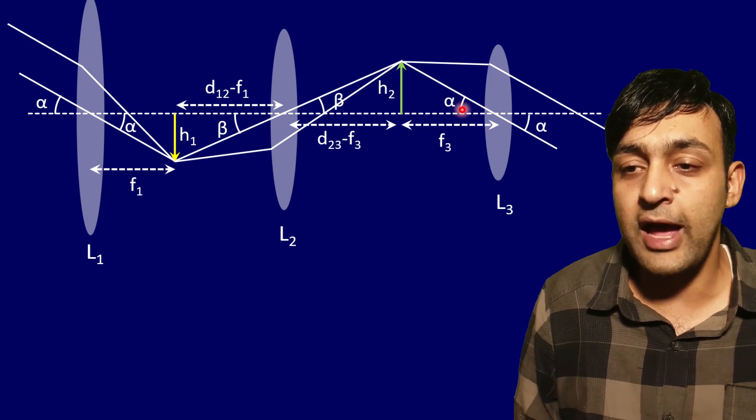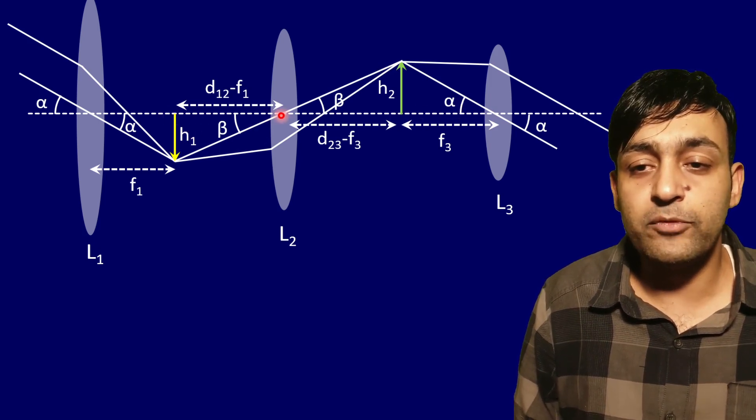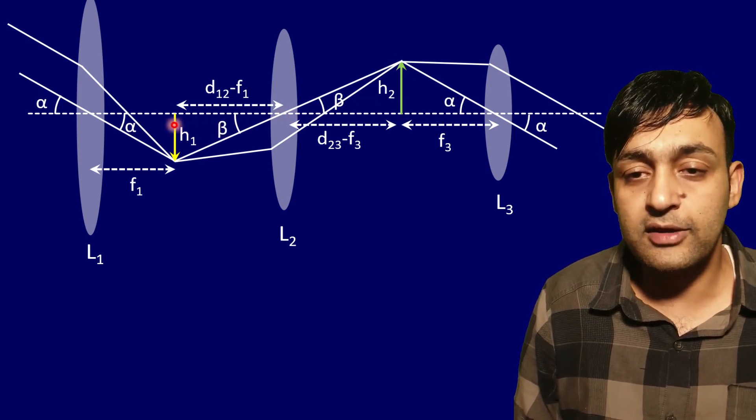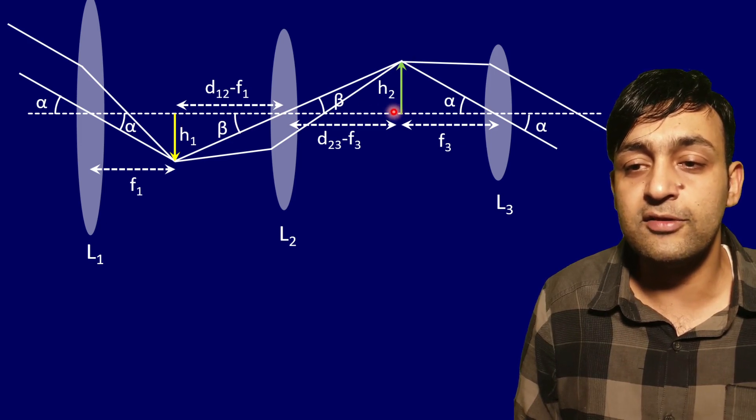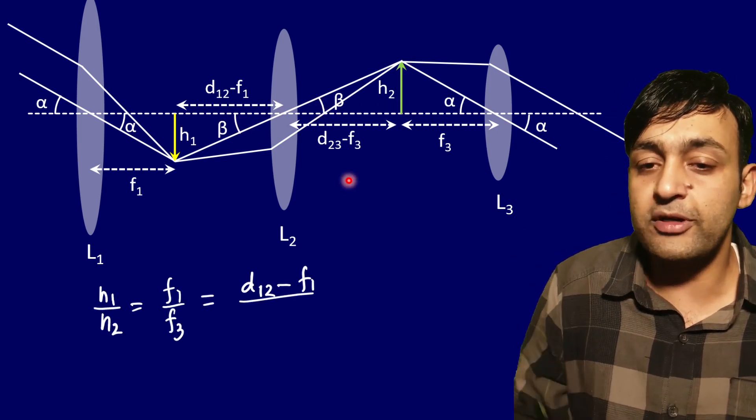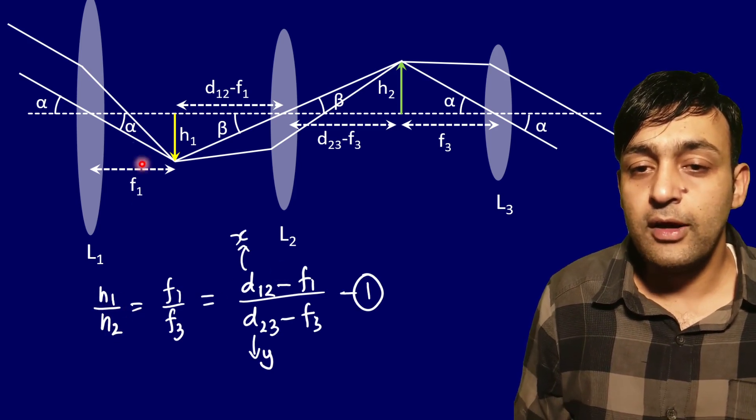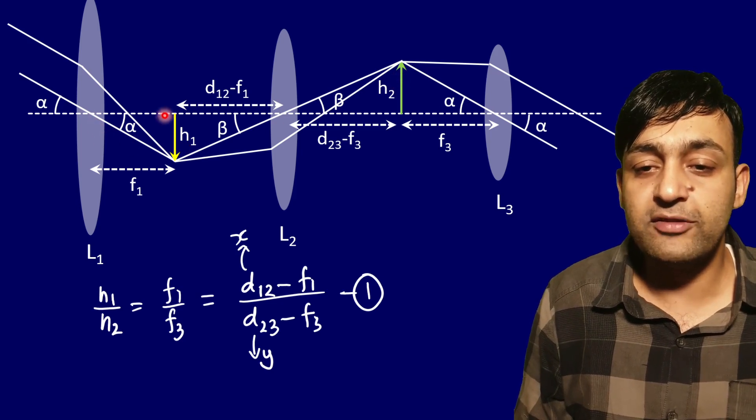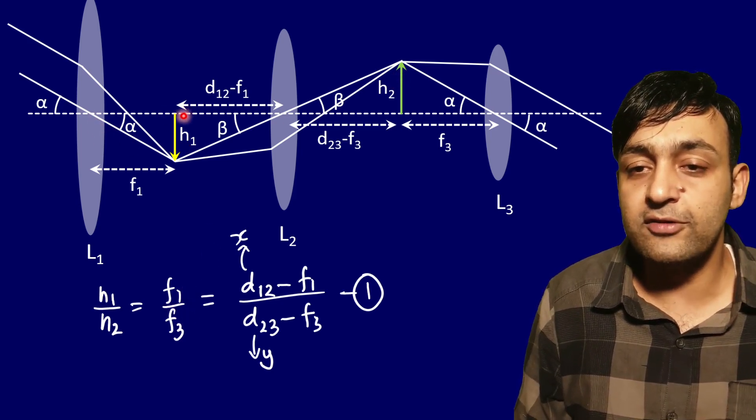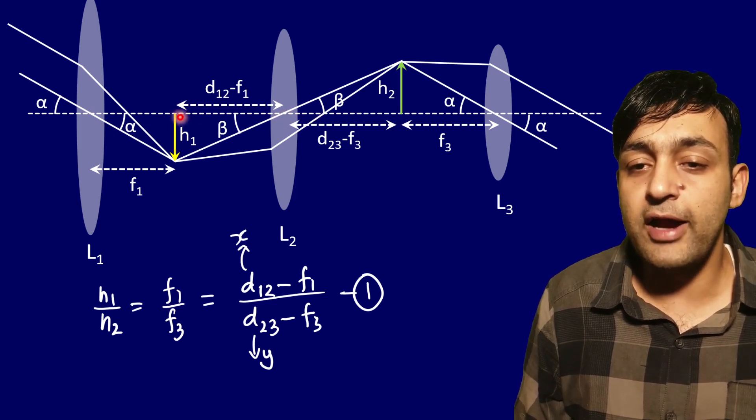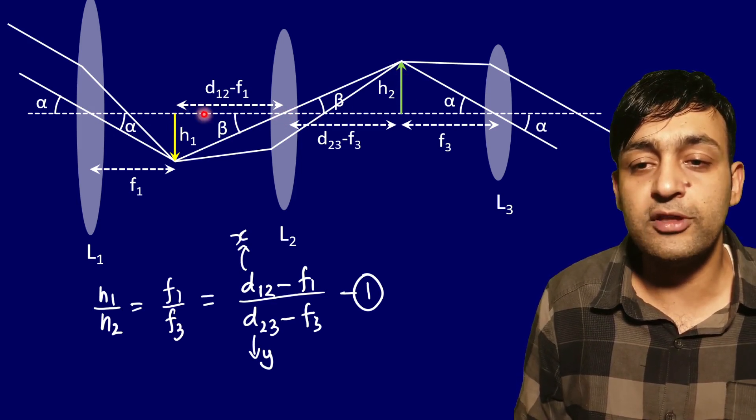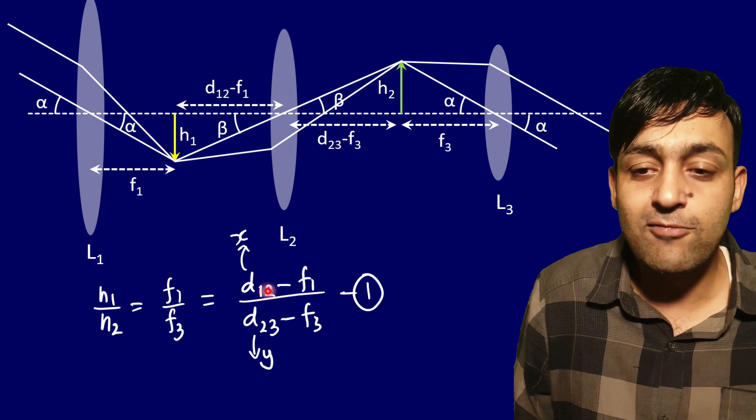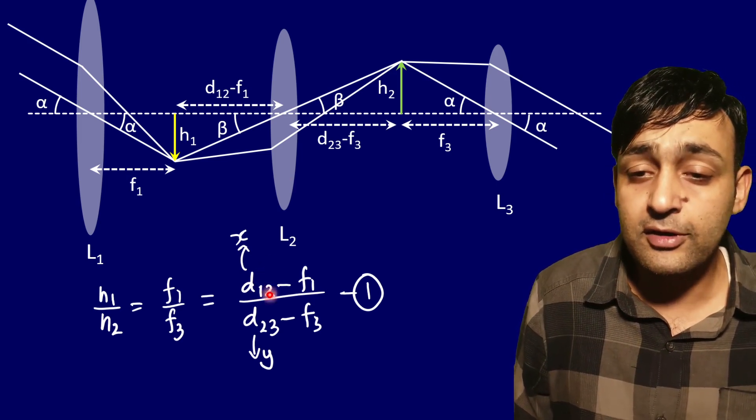Similarly, this triangle here and this triangle here will also be similar triangles - this angle is 90, this is beta, and here this is 90, this is beta. We will use the properties of similar triangles. The ratio of heights - if we consider these triangles - will be equal to ratio of the bases, that is f1 by f3. Similarly, the ratio of heights h1 by h2 will be equal to this basis here. For simplicity, so I don't have to write d12 with subscripts all the time, I just took the value of d12 as x and d23 as y.